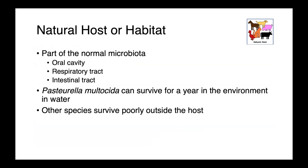All of these organisms are part of the normal microbiota — they're found in the mouth. Pasteurellaceae should commonly be associated with the oral cavity; they're also in the respiratory tract and the intestinal tract. Pasteurella multocida has the ability to survive for up to about a year in the environment, in water, while other species tend to survive quite poorly outside the host.